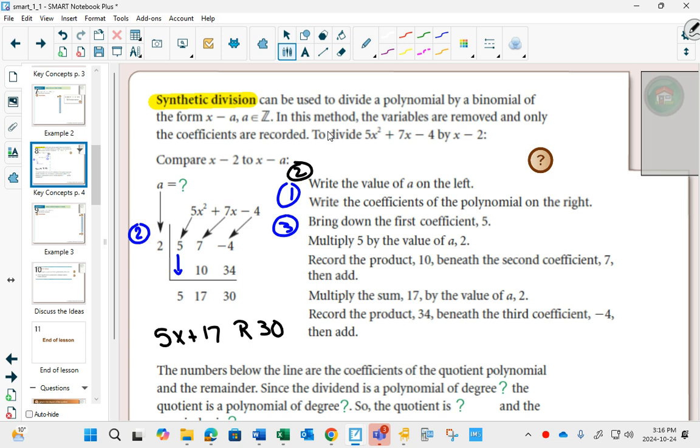You can also start with the first one and say, if you started with an x squared and you divided by an x, you're going to be left with just an x. So it's going to always be one less than what you started with. This is synthetic division.